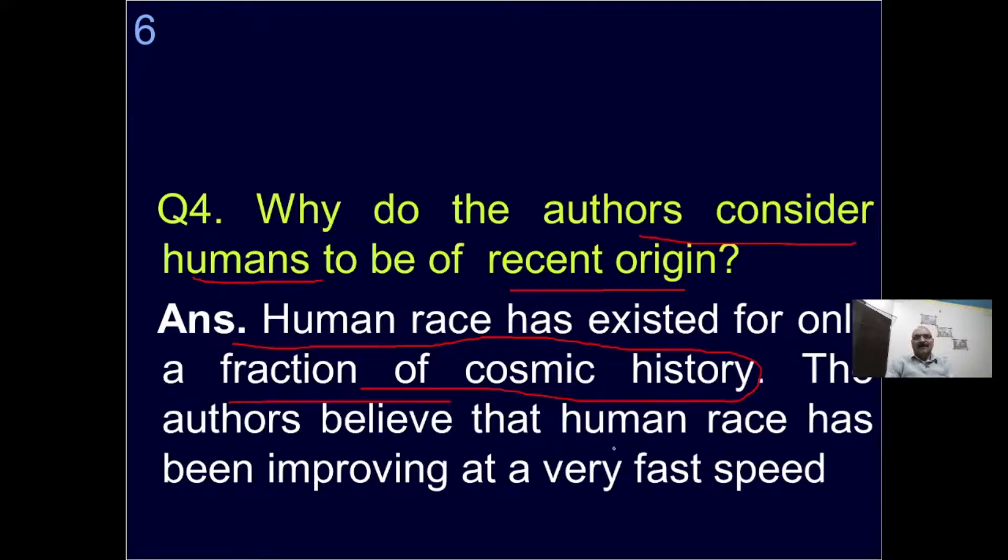The authors believe that the human race has been improving at a very fast rate. The development that happened in the human race, the evolution that occurred, happened at a very fast speed. If the human race had been born earlier on earth, by now there would have been much more development.